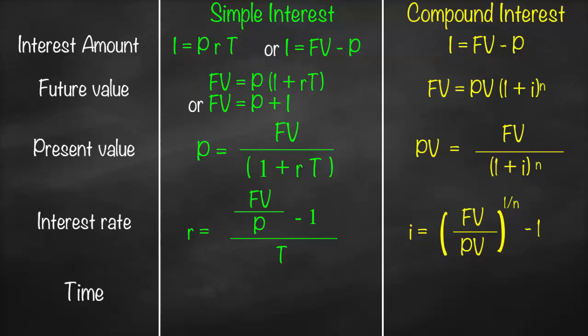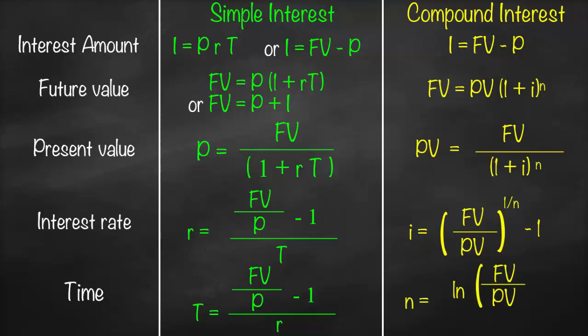For time, in simple interest, T is equal to (future value divided by principal, minus one), all divided by r. While for compound interest, n is equal to ln(future value divided by present value), all divided by ln(1 plus interest rate).